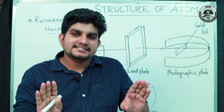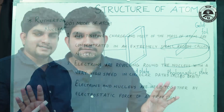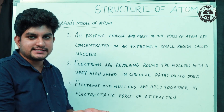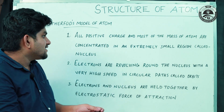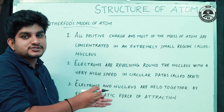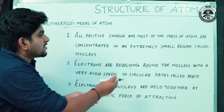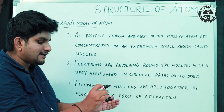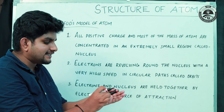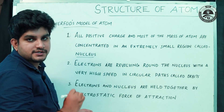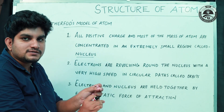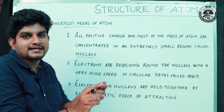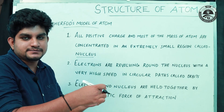That is why Rutherford's Planetary Model of the atom is introduced. From the Alpha Particle Scattering Experiment, Rutherford proposed three postulates. First: all positive charge and most of the mass are concentrated in a very small region called the nucleus, which is why most of the space is empty. Second: electrons revolve around the nucleus in fixed circular orbits at high speed.